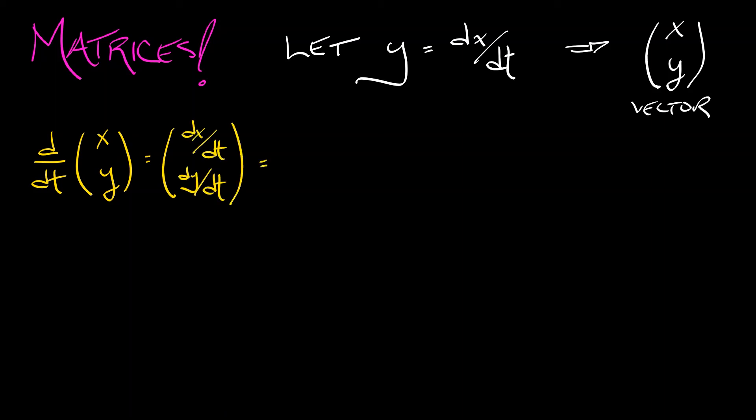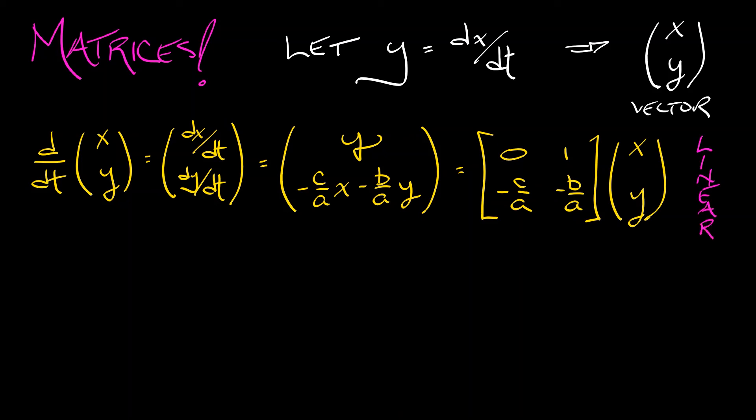So the derivative of this vector x, y is dx dt and dy dt. dx dt is y. dy dt is really the second derivative of x. We can take our differential equation, solve for the second derivative. We get minus c over a times x minus b over a times y. And voila, this is a linear system. I can pull out the coefficients into a two by two matrix. That matrix being 0, 1, negative c over a, negative b over a. That matrix applies to x, y. And now we've got this linear system where our matrix a is this matrix 0, 1, negative c over a, negative b over a. And our vector x, with a little underline, is really x and y, the derivative of x.